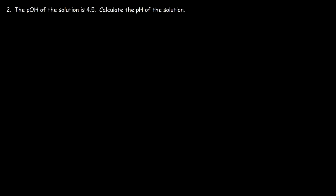Number 2. The pOH of the solution is 4.5. Calculate the pH of the solution. The next equation you want to add to your list for acids and bases is that the pH plus the pOH of a solution must add to 14, especially at 25 degrees Celsius.